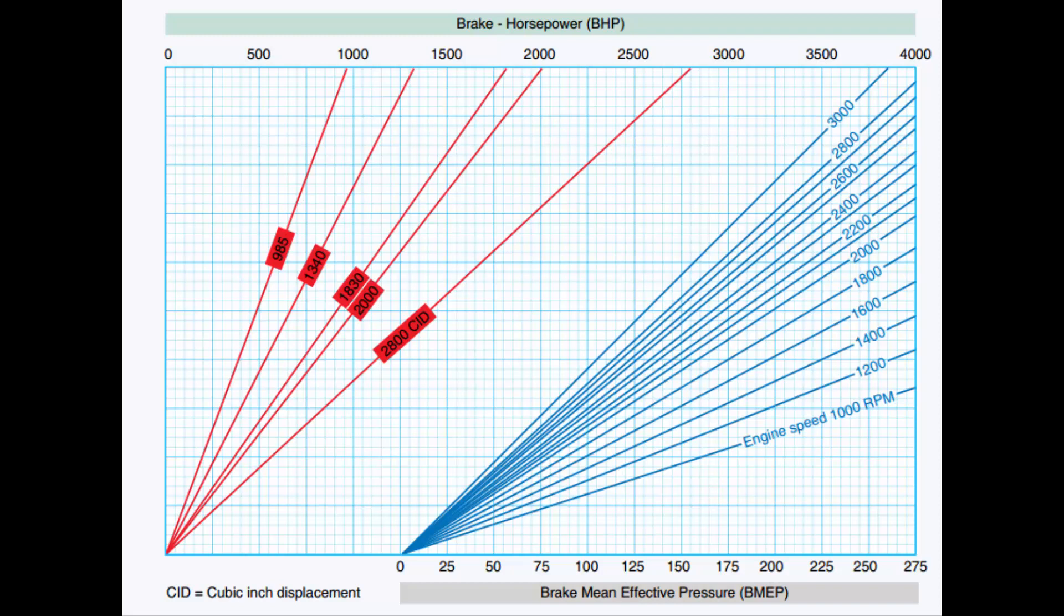So first we find this 2000 brake horsepower. We follow this down until it intersects our engine displacement, which is 2800 cubic inch.